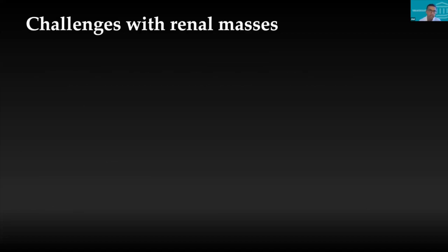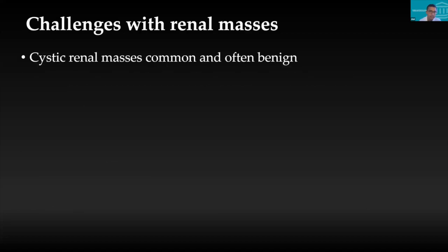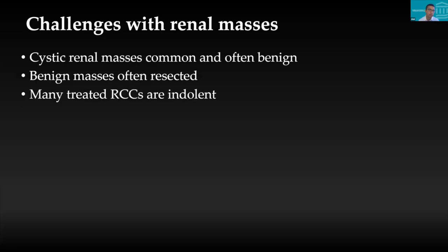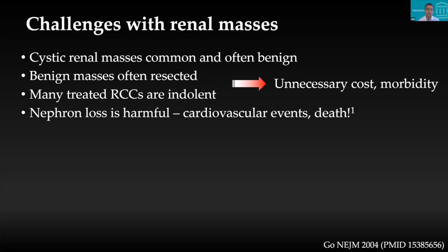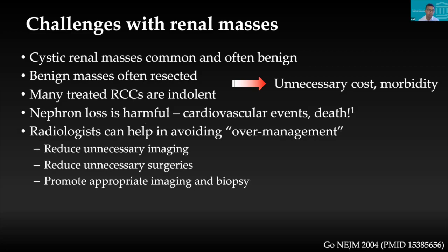Renal masses are common and often benign, and yet they are often resected. Many of the treated RCCs are indolent, meaning we are over-treating them, leading to unnecessary cost and morbidity. We know that nephron loss is harmful — it leads to cardiovascular events and even death. As radiologists, we can help avoid over-management by reducing unnecessary imaging, reducing unnecessary surgeries, and promoting appropriate imaging and biopsies.